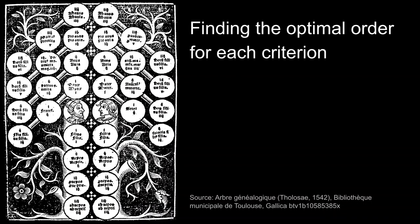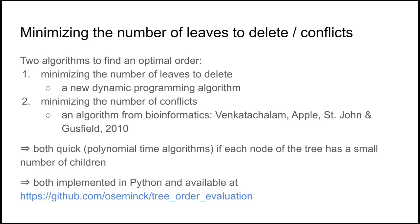And now, let's see how we will find the optimal order to optimize those criteria. Actually, we implemented two algorithms to find this optimal order. The first one, minimizing the number of leaves to delete, it's a new dynamic programming algorithm that we introduced, inspired by the longest increasing subsequence algorithm. The second one, we reused an algorithm which was designed for bioinformatics 10 years ago, in 2010. And both are quick enough for the trees that we had. And they are quick enough, especially if each node of the tree has a small number of children. In the cases I showed you, it was binary tree. Every node has two children. So it was fine. And so you can download it on GitHub, on Olga's account, and you can test it on your own data if you want.